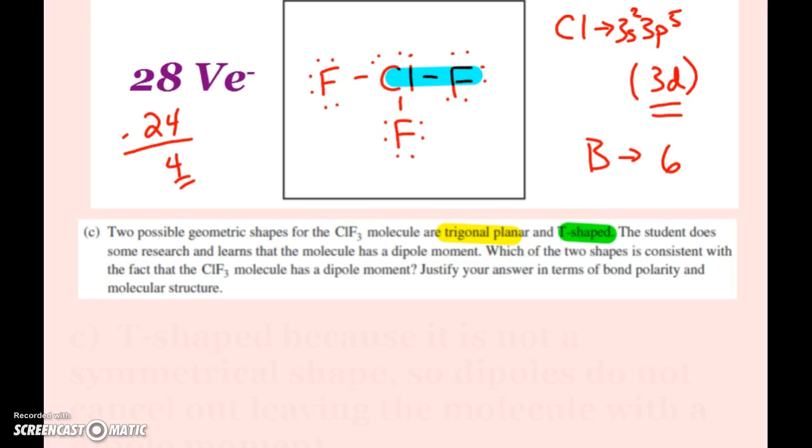Anything attached to fluorine is going to be a polar bond except another fluorine. So we have three polar bonds here. If I have a trigonal planar shape, that's symmetrical. Everything's on the same plane. Those dipole moments would cancel out. T-shaped would then not.